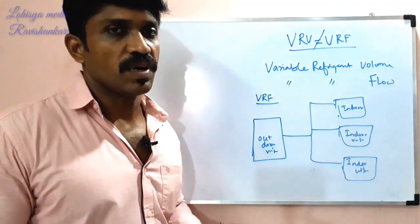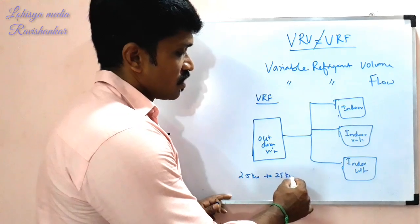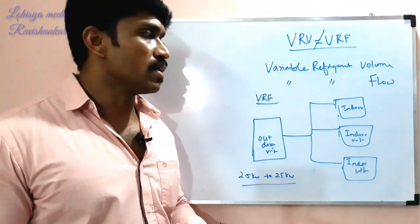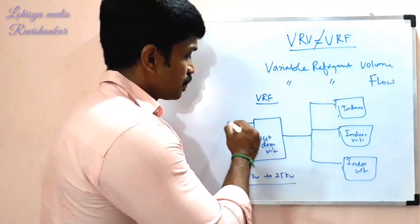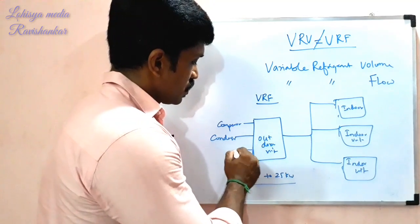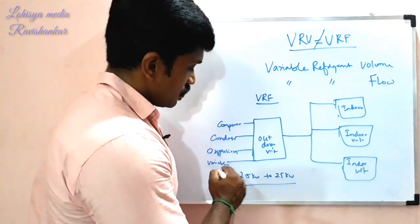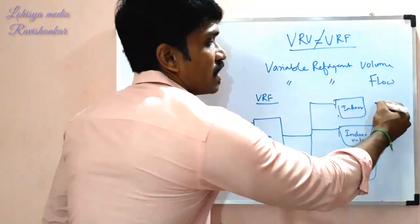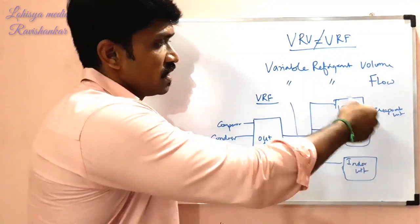In this VRF system, you can use a capacity range starting from 2.5 kW. The outdoor unit uses a variable frequency drive. The main components are the compressor, condenser, expansion device, and the evaporator unit in the indoor unit.